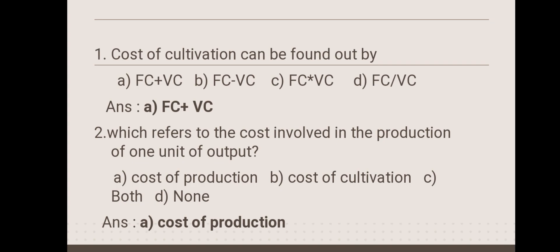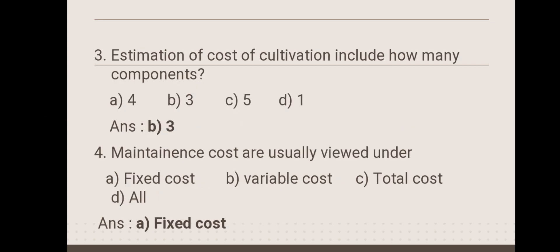Next: which refers to the cost involved in the production of one unit of output? Option A: cost of production, option B: cost of cultivation, option C: both, option D: none. The answer is cost of production.